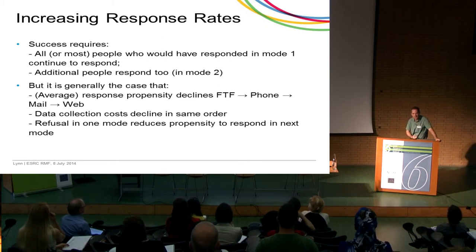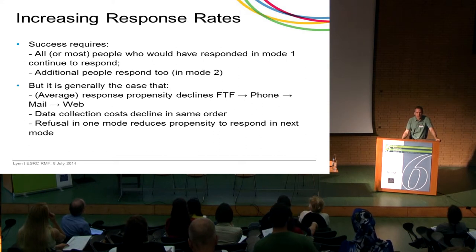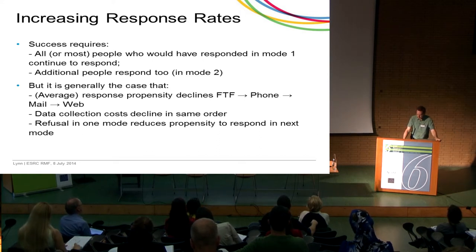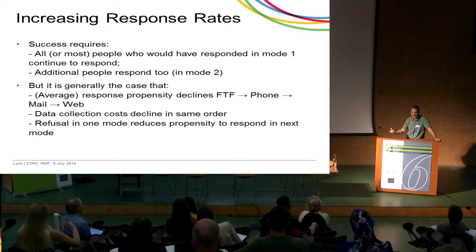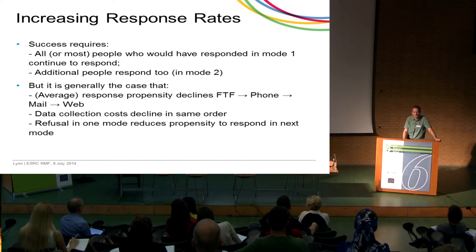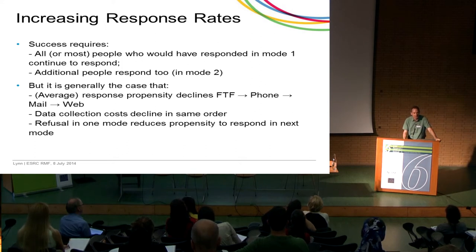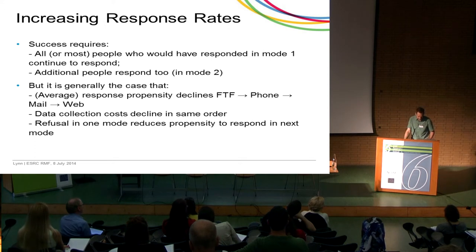The average response propensity declines as you go from face-to-face to phone to mail to web, and data collection costs also decline in the same order. That's partly why it's very hard to design something that both saves money and increases response. If you use modes in the order face-to-face, phone, mail, web — you don't save money. If you use the opposite order, response rates suffer. This implies some people, after being invited first to a web survey, are then less likely to agree to a face-to-face interview when followed up — several studies confirm this, though the mechanisms aren't fully understood yet.